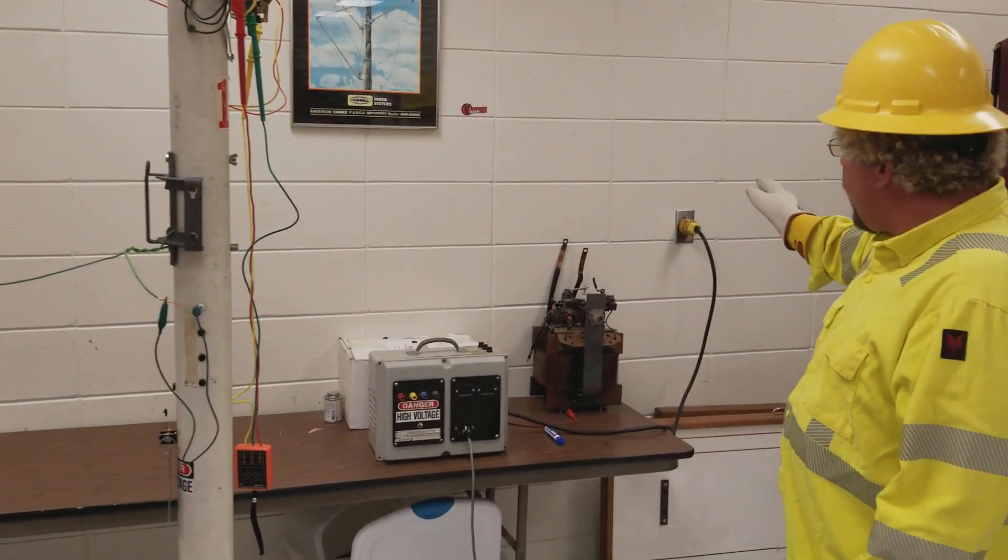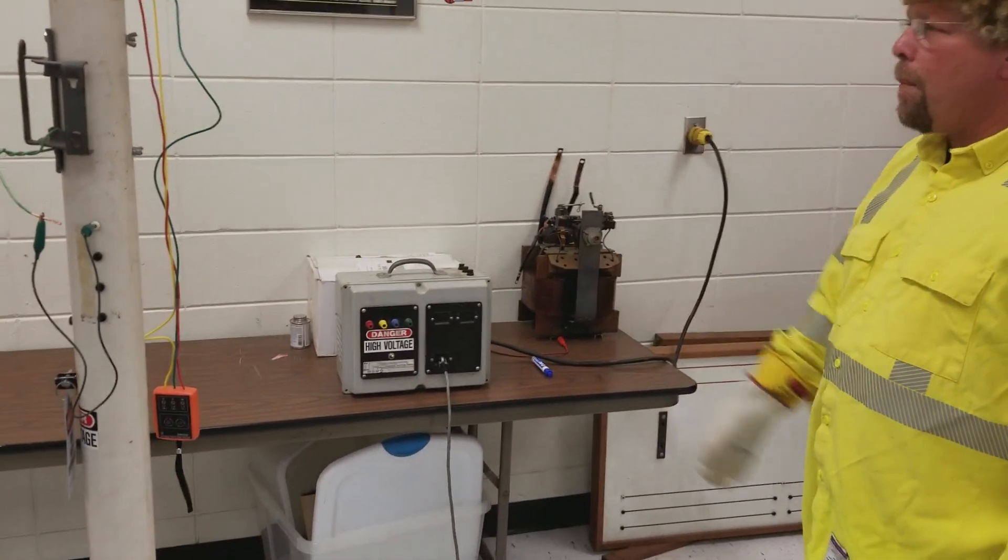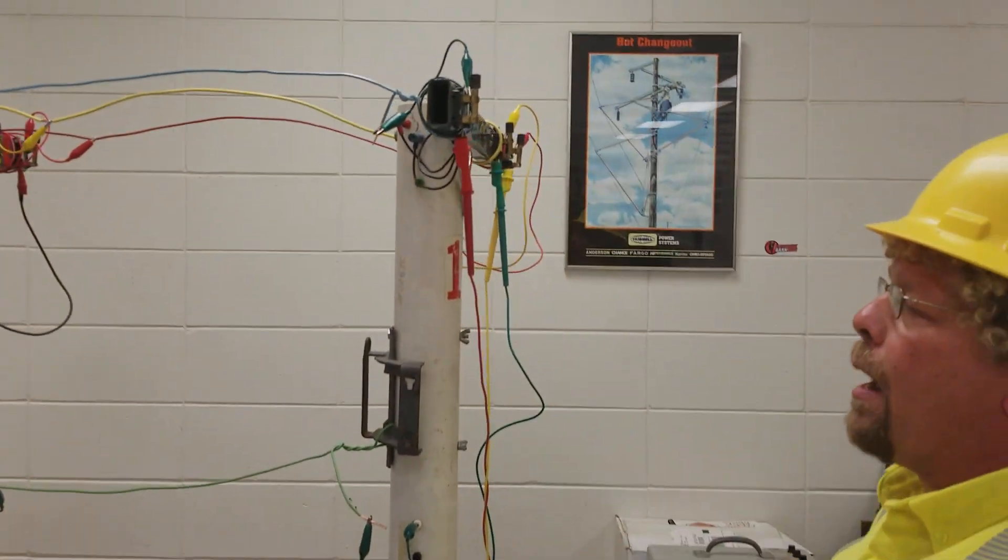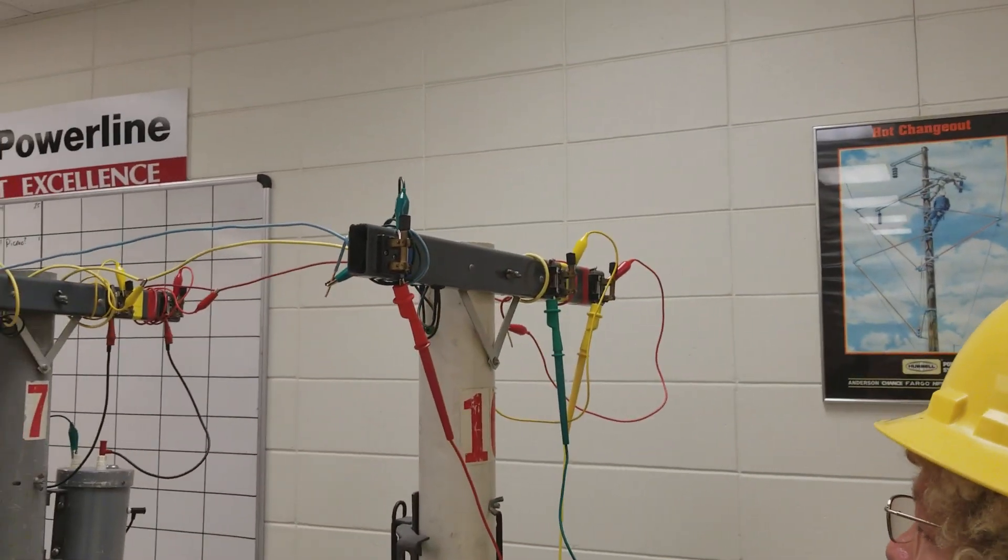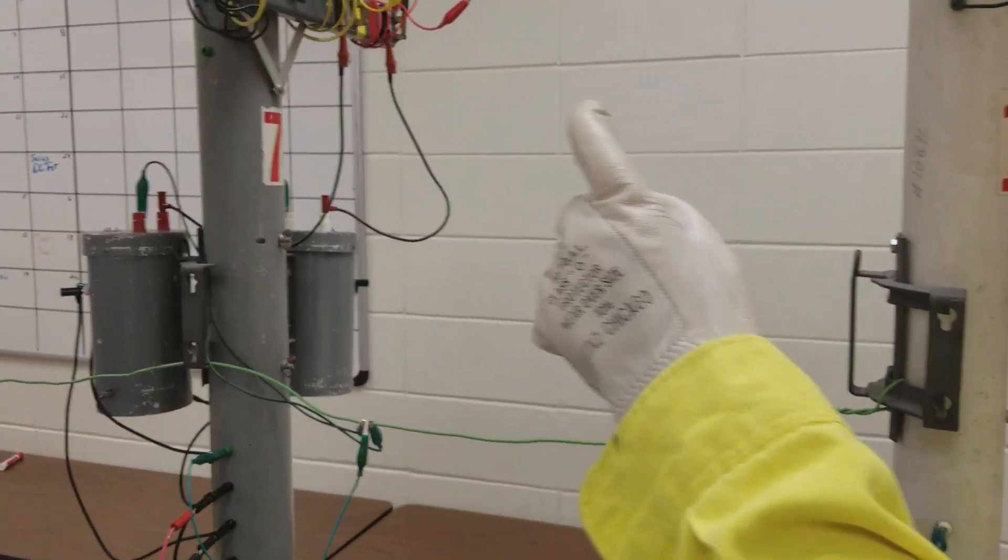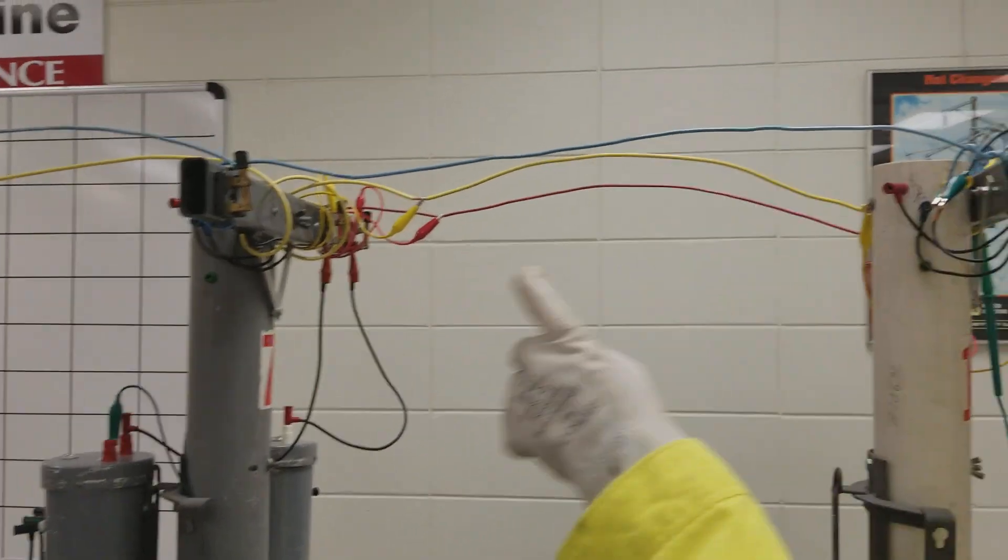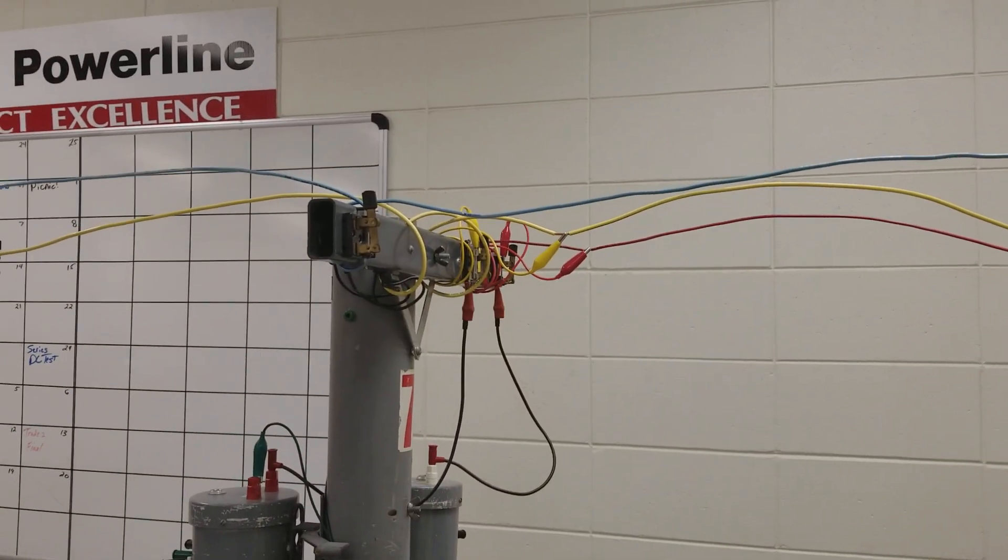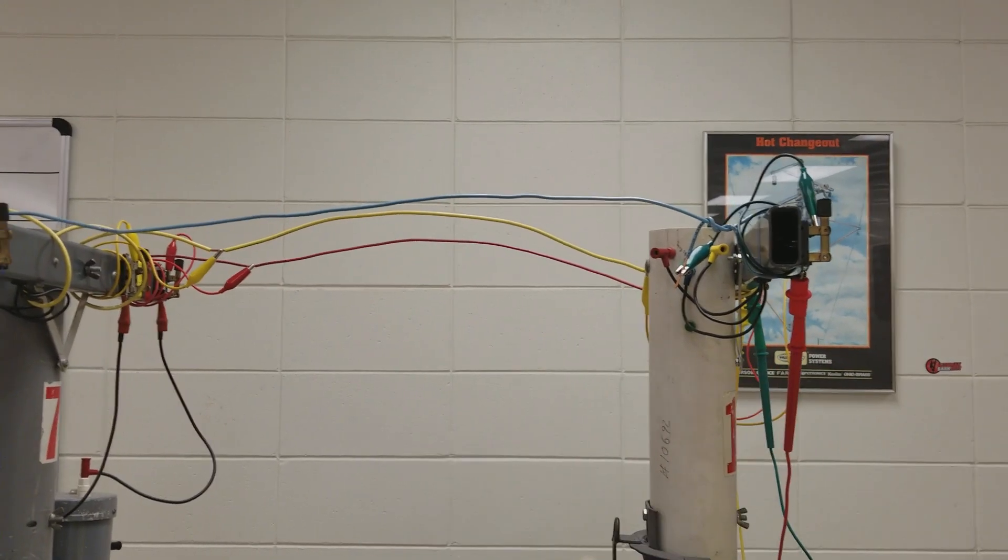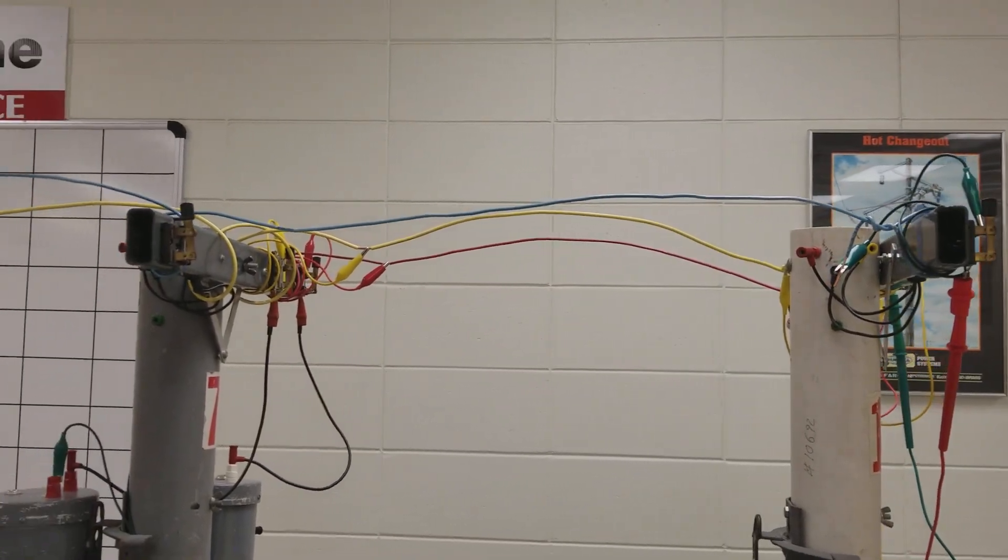So what we have here, we have three phase power from our building coming to our power supply. Power supply is connected to the first pole which energizes the primary for our example here. Normally these poles are all fed through the pole internally and we have connections up above where we connect our transformers. But for this demonstration,